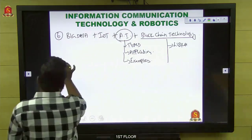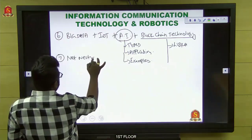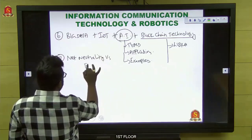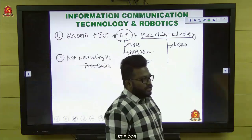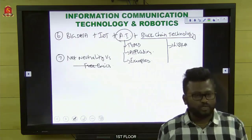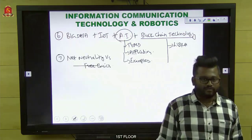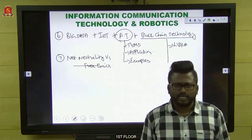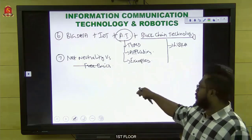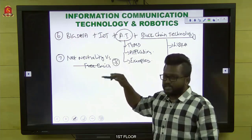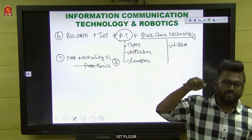The seventh topic is net neutrality versus free basics — a purely technical conceptual topic. Know what net neutrality is, what free basics is, and the recent recommendations given by TRAI (Telecom Regulatory Authority of India). They gave approximately seven recommendations — go through those seven recommendations; that is enough for this topic. The conceptual understanding is required, not technical jargon — you need to understand concepts to answer questions.